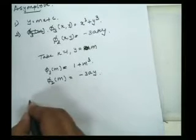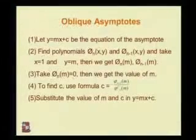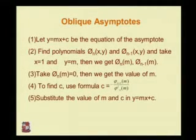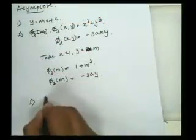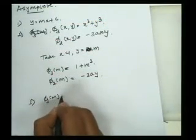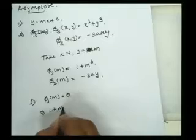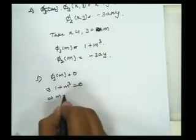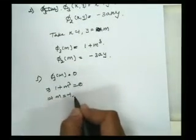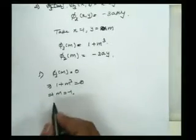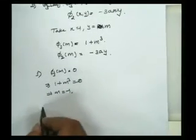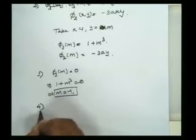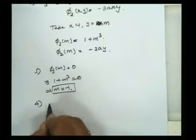Third step: take phi_n(m) = 0 to get the value of m. phi_3(m) = 0 means 1 + m³ = 0, then we get m = -1. The other values are imaginary so there is no need to trace those. m = -1. Similarly, we can find c using the next step.